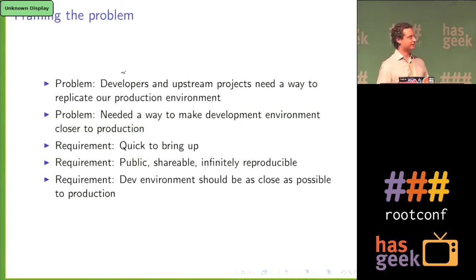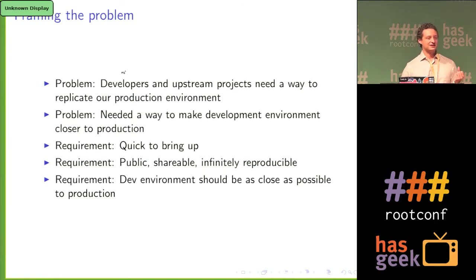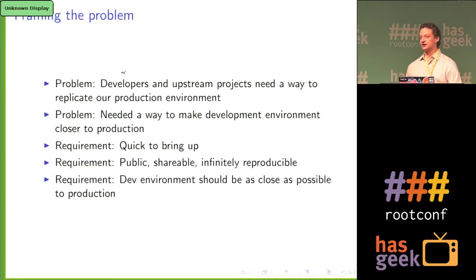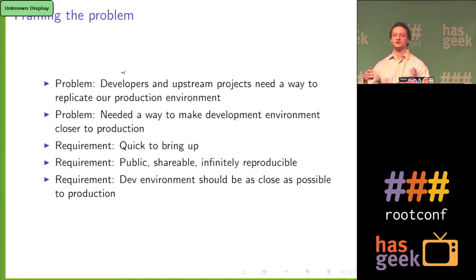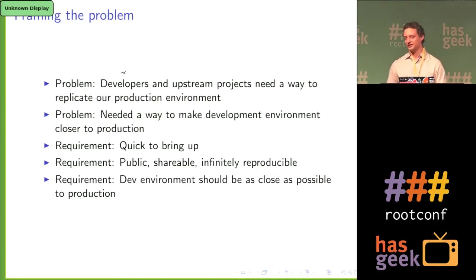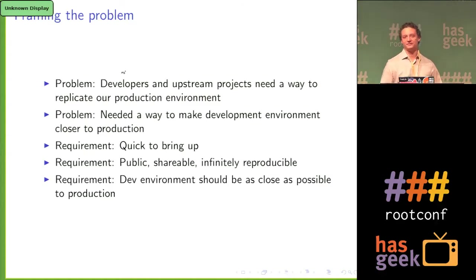We wanted to frame the problem first. The problem is that developers and upstream projects needed a way to be able to replicate our production environment. If we have a problem with Git on our Git server and we wanted to go to the Git people and say we have this problem, we understand it's a scaling problem, this is the version of code we're running, and here's the entire system that goes with it — that way, if we have a problem, we can send it to them and they can easily replicate the problem. They can add their own tools and start debugging it in ways that we can't even imagine, and then help us solve our problem.